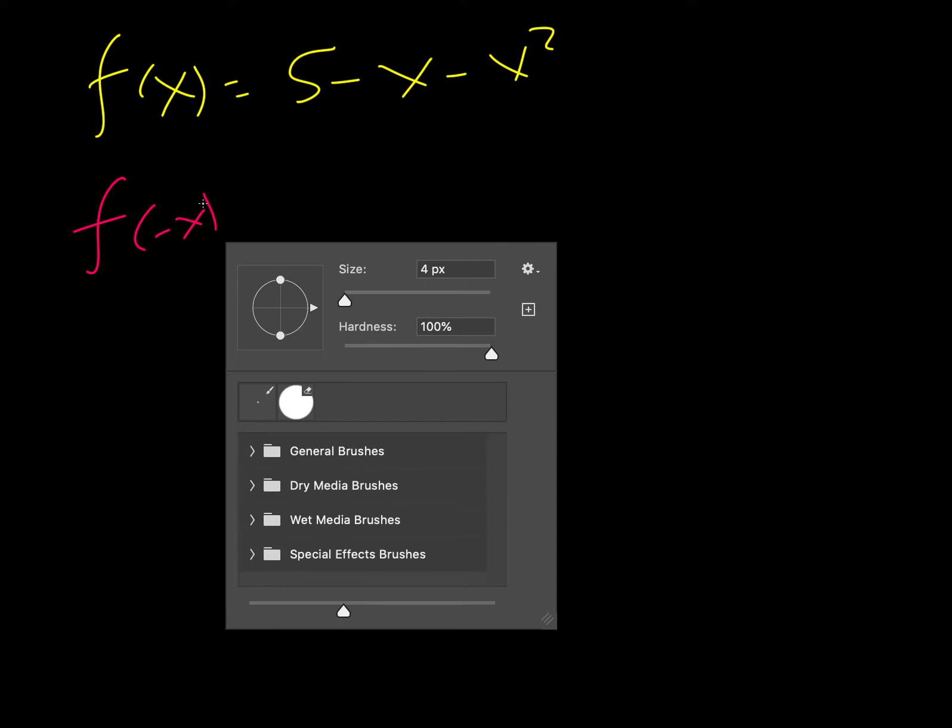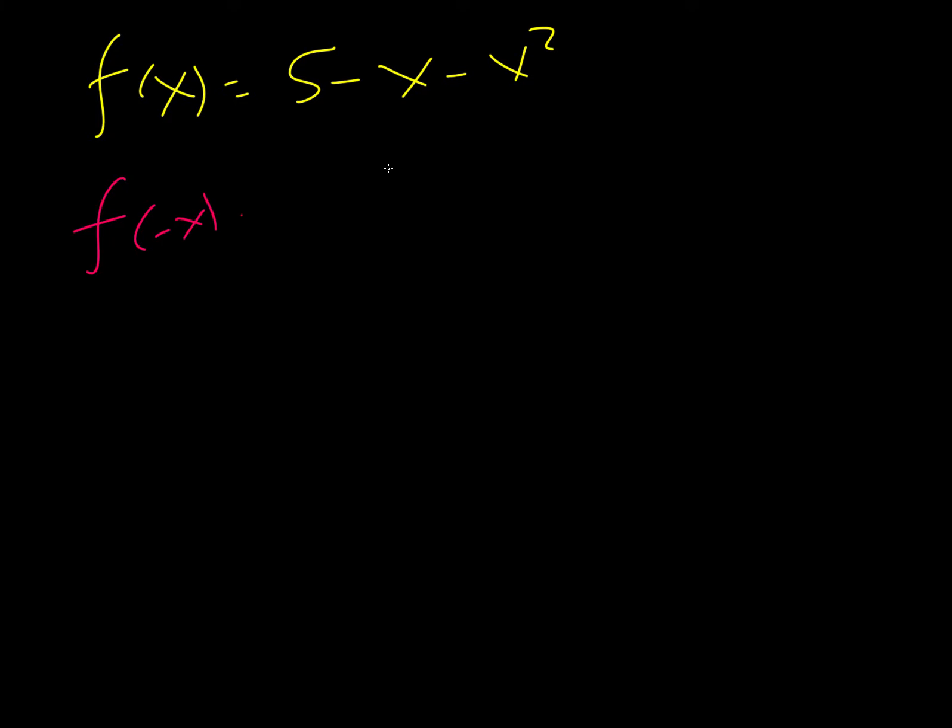The next one gives us f of x is equal to 5 minus x minus x squared. And they want us to find f of negative x. So all we're going to do is replace all the x's with negative x's. And especially on one like this, I highly suggest using parentheses like that. There's high potential on this one to make a sign error. So try to just take your time on that.